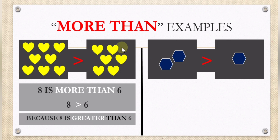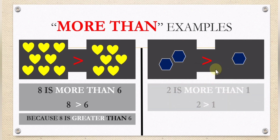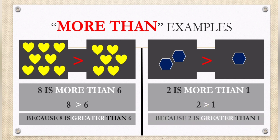Here is another example. How many hexagons inside the box? First box — let's count: one, two. How about in the second box? One. If we are going to read it: two is more than one. Or it can be written like this — two is more than one. Why? Because two is greater than one, or two is a bigger number compared to one.